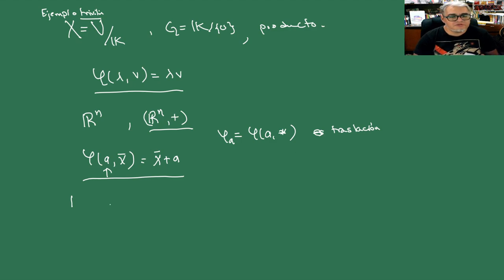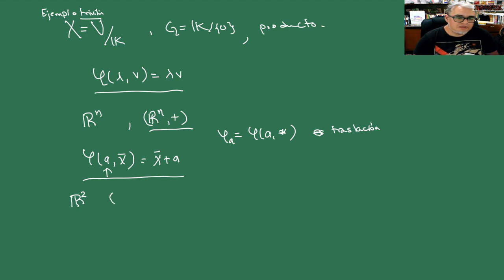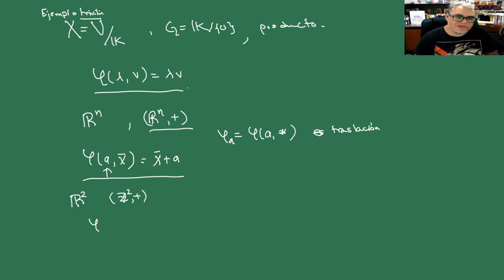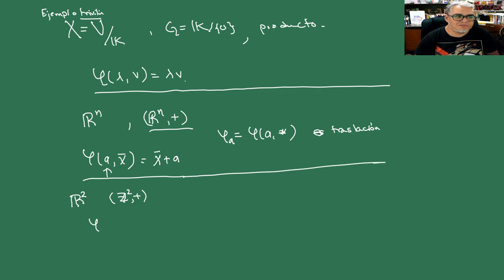Si se fijan, estamos como foliando ese espacio de funciones. Ahora, uno que hicimos recién: agarremos R² como nuestro conjunto, y como grupo tomemos Z² con la suma. Entonces, ¿cómo definimos phi aquí? Eso nos falta un poquito; lo podemos hacer en el espacio que tenemos separado. Esto determina esa cosa, pero ¿cómo probamos que de veras es una acción de grupo?